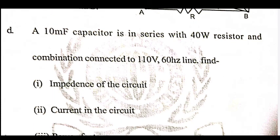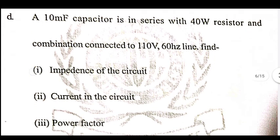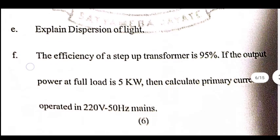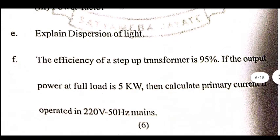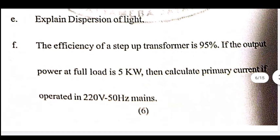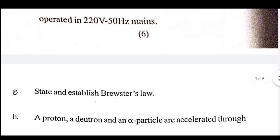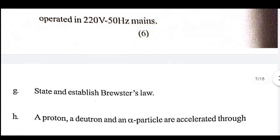Find the impedance of the circuit and current in the circuit. Find the power factor. Dispersion of light. The efficiency of a transformer is 95%; if the output power at full load is 5 kW, calculate the primary circuit current if operated at 220 V, 50 Hz.